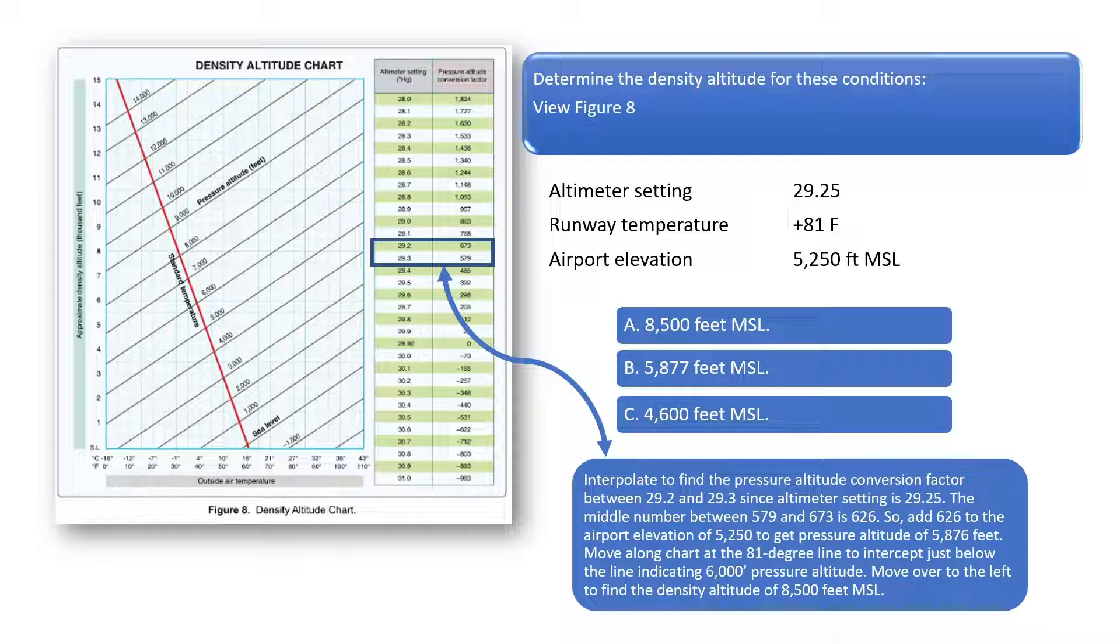Add 626 to the airport elevation of 5,250 to get the pressure altitude of 5,876 feet. Now draw a line from the bottom of the chart just to the right of the 80-degree indicator since the outside air temperature is 81 degrees Fahrenheit. Draw the line up to just below the 6,000-foot pressure altitude line since the pressure altitude is 5,876 feet. See the circle with the X in the chart.